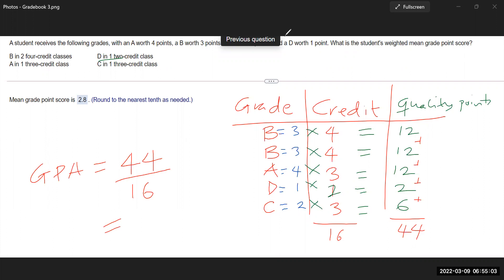And when you do 44 divided by 16, this gives you 2.75. But we have been asked to round to the nearest tenth. And this will be 2.8. And that is how you find the student's GPA for the semester.